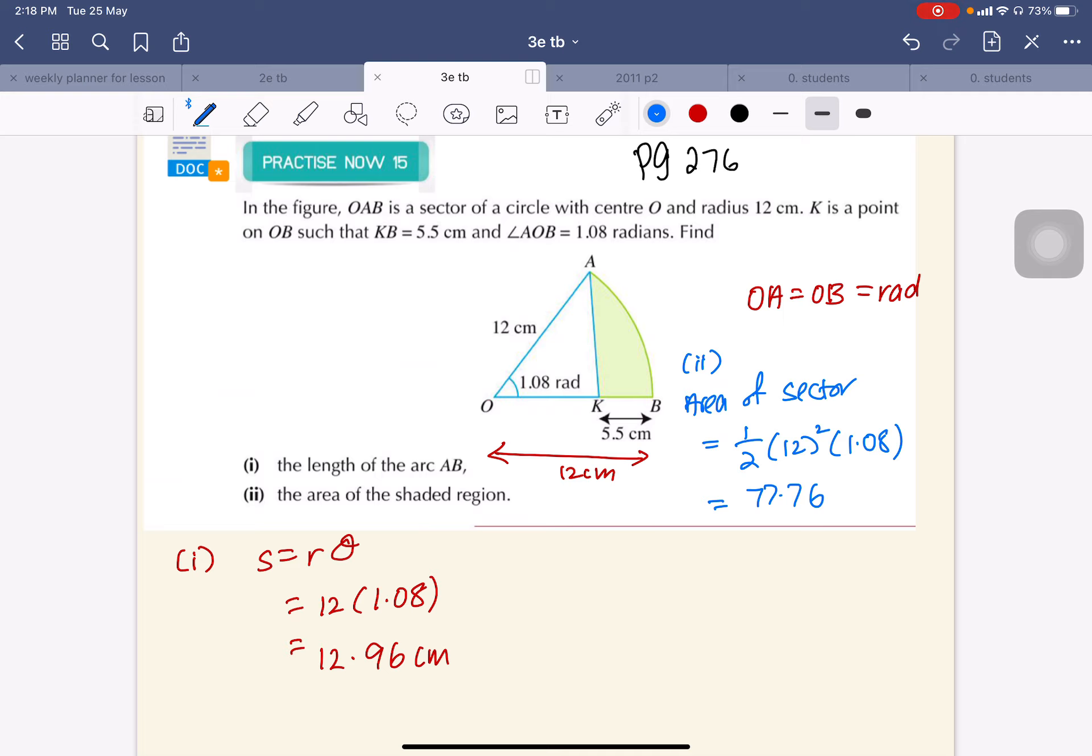Not a right angle triangle, so you cannot use half base times height. I will use half a b sine C. Half, now a and b: 12 minus 5.5 equals 6.5. The C is the included angle.